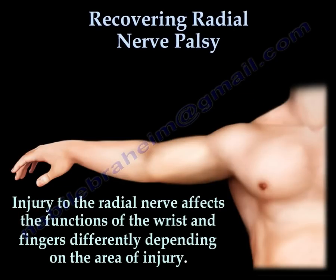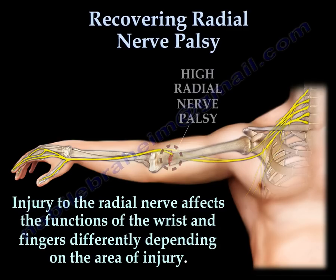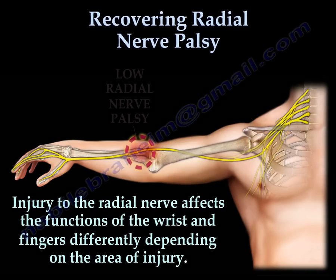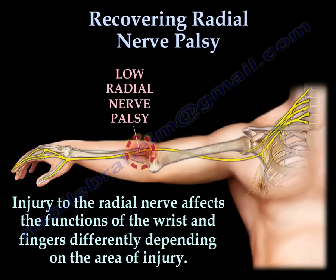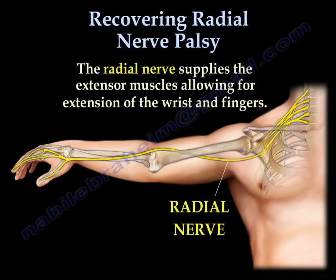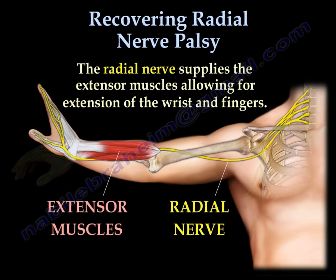Injury to the radial nerve affects the function of the wrist and fingers differently depending on the area of injury. It can be high, above the elbow, or low, around and below the elbow. The radial nerve supplies the extensor muscles, allowing for extension of the wrist and fingers.